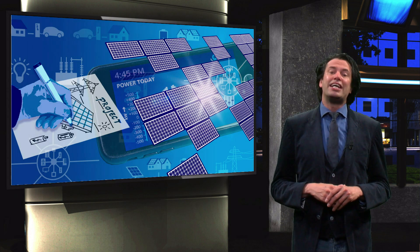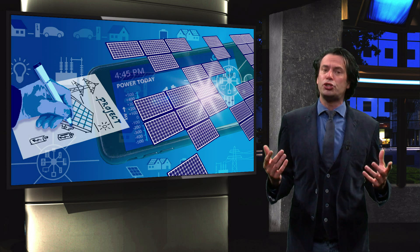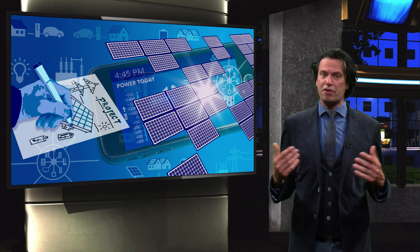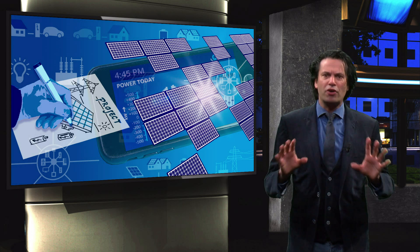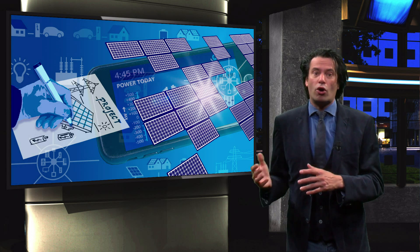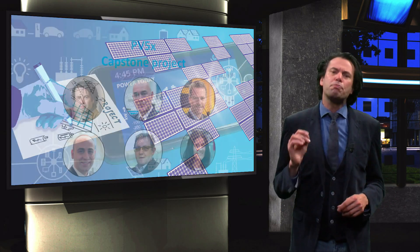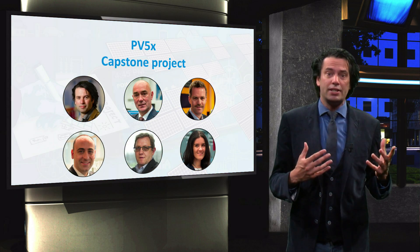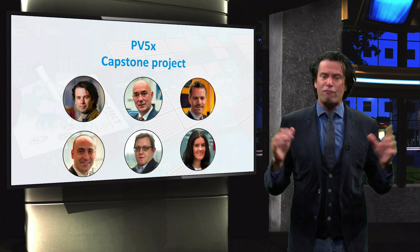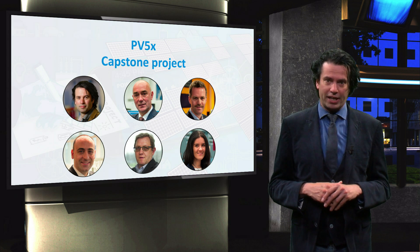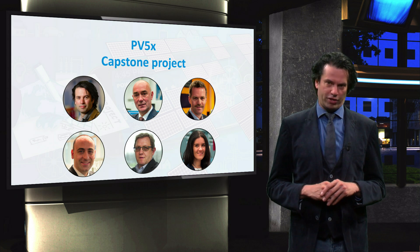The final course is the capstone project. Here you will apply the knowledge you gained in the previous four courses to a solar energy project. You will work on either your own project or on a project provided by the course team. These projects can be focused on design, analysis, monitoring or integration of any photovoltaic application. Your project will be judged by one of the professors.